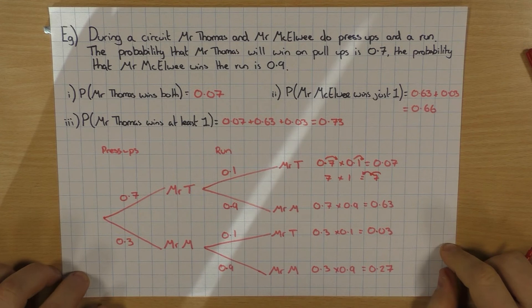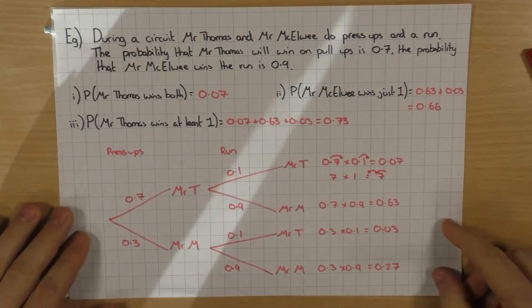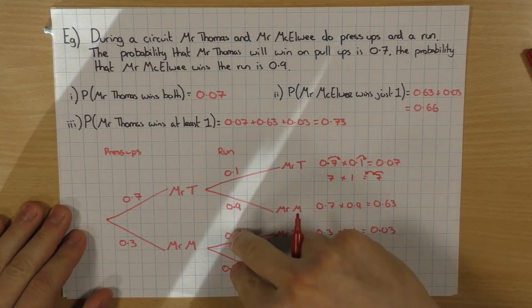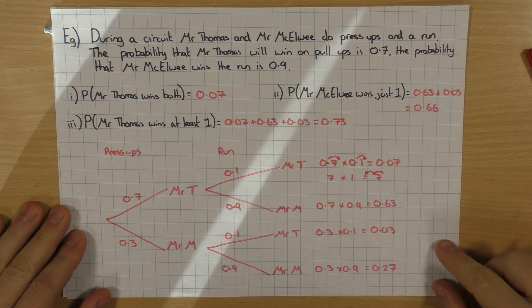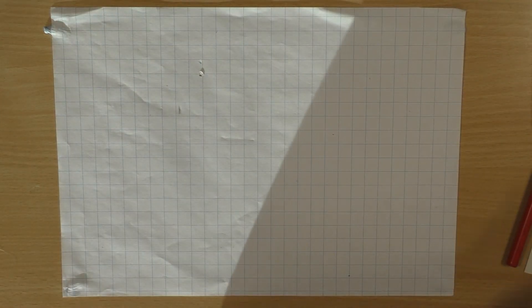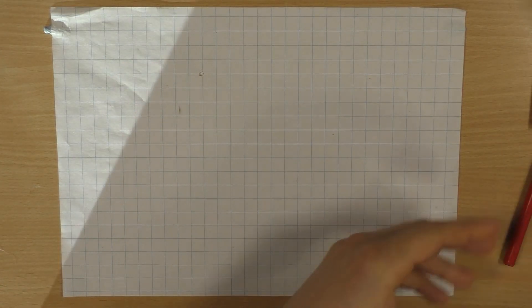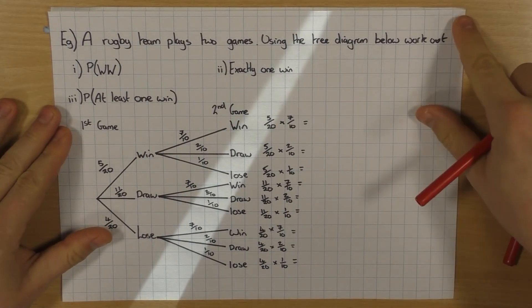The probability that Mr. Thomas wins at least one: win-win gives 0.07, win-lose gives 0.63, and lose-win gives 0.03. Adding them all together gives 0.73. Okay, so that's just an example using decimals. I've got one more example to show you — this time with three events.